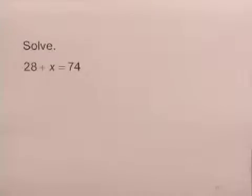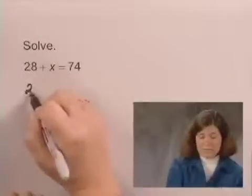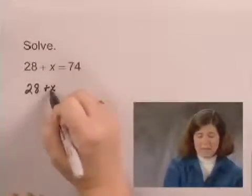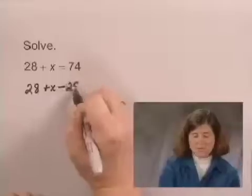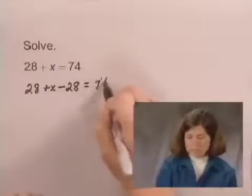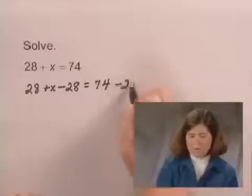To solve for x, we need to subtract 28 from both sides of the equation. So we have 28 plus x minus 28 equals 74 minus 28.